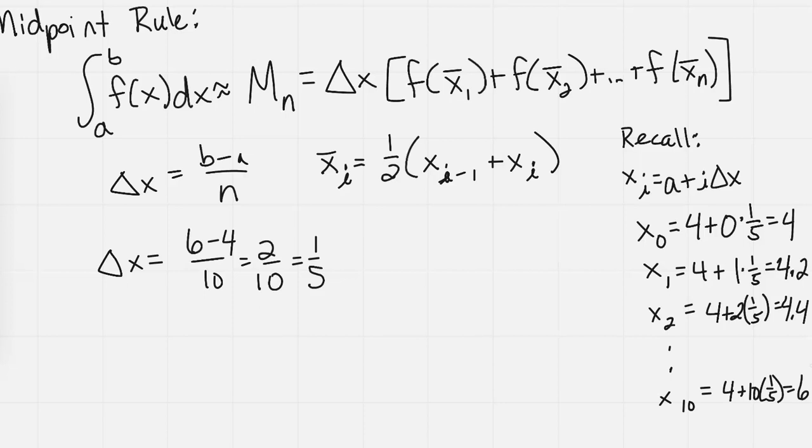Now let's find the midpoint. So x bar sub i, let's find x bar sub 1. That's going to be equal to 1 half times x sub i minus 1, which is x sub 0 for this iteration, because x bar sub 1 - so I did 1 minus 1, x sub 0 - plus x sub i would then be x sub 1, utilizing that same i. And our x sub 0 we have on the right here was 4, and our x sub 1 was 4.2.